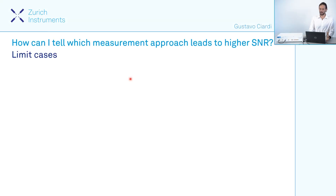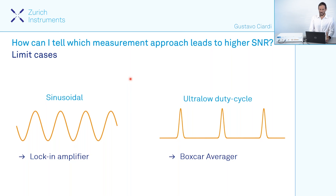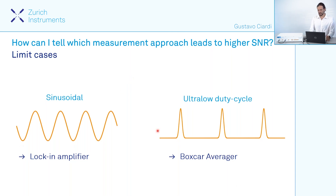How can I tell which measurement approach leads to the best SNR for my experiment? Is there a recipe for this? For limit cases we can say that if we have a signal that is basically purely sinusoidal, I would like to measure my signal with the lock-in amplifier. At the same time, if I have a signal whose duty cycle is ultra low, the boxcar averager will be the best choice.